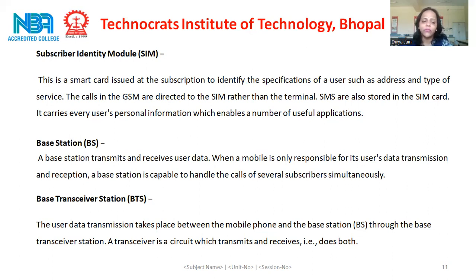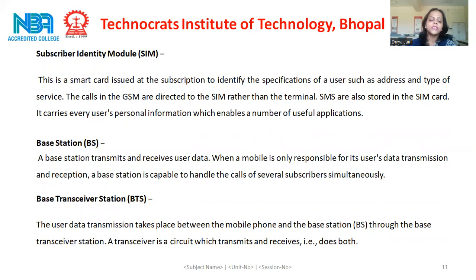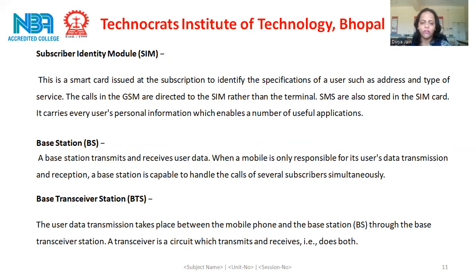The next part of mobile telephony is the base station. A base station transmits and receives user data. While a mobile is only responsible for its user's data transmission and reception, a base station is capable of handling the calls of several subscribers simultaneously. The subpart of a base station is the base transceiver station. The user data transmission takes place between the mobile phone and the base station through the base transceiver station. A transceiver is a circuit which both transmits and receives. The towers located on rooftops of buildings are called base stations, and the antennas implanted on these base stations are called the base transceiver station.